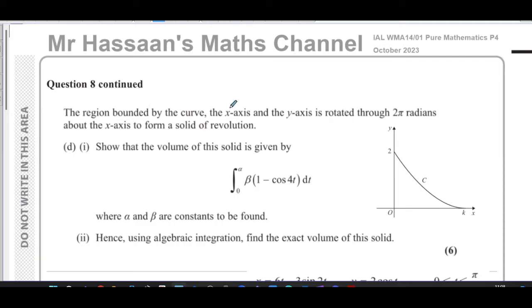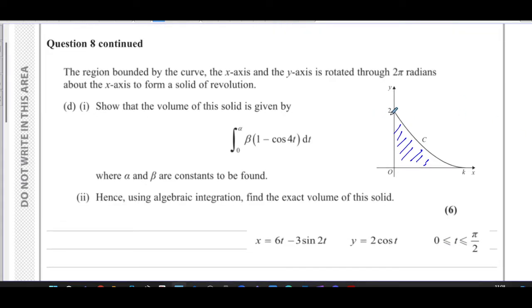So it says the region bounded by the curve, the x-axis and the y-axis, this region over here, is rotated through two pi radians about the x-axis to form a solid of revolution. So you end up with some sort of like a shape that looks like some sort of like one of those old types of kind of speakers, old days, right?